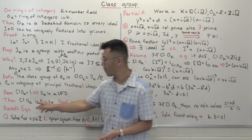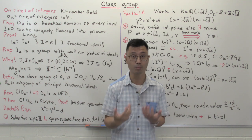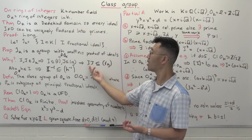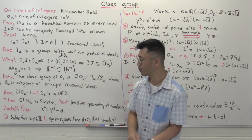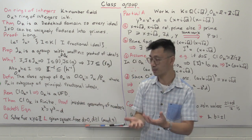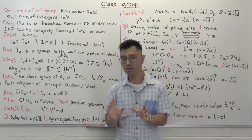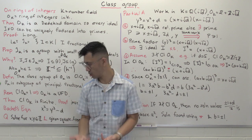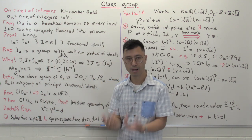The big theorem about what the class group looks like is that the class group of the ring of integers is always a finite group. By the way, it's always an abelian group — you're looking at the product of ideals in this commutative Dedekind domain, so it's a commutative group, and in fact it's a finite abelian group. The proof is actually quite long and involves something called the geometry of numbers; that will take a couple of videos to explain. What I want to do in the rest of this video is talk about how knowledge of this class group — which contains arithmetic information about the number field and ring of integers — can tell us about arithmetic.